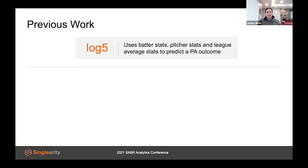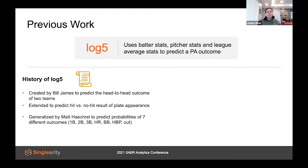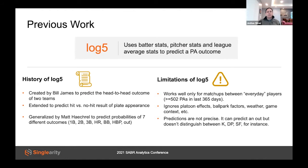One previous approach is Log5, originally developed by Bill James. Log5 uses batter stats, pitcher stats, and league average stats to determine outcome probabilities. While it sort of works, it has limitations. It really only performs decently on matchups between everyday players — typically a starting pitcher facing a batter regularly in the lineup. Yet over 80% of plate appearances do not occur between an everyday batter and a starting pitcher. Additionally, factors like platoon effects, pitch counts, and park factors are really just band-aids when shoehorned into Log5. And even extensions to Log5 only predict a limited number of output types, because predicting outs like double plays or sacrifice flies requires a deeper understanding of the game.